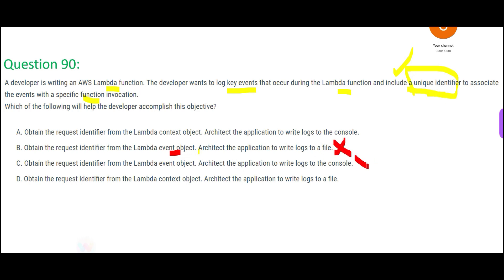We have to choose between D and A. D says to write logs to a file — if there are so many logs going to only one file, that is a problem. The other option says write logs to the console, which is the CloudWatch console. So the context object gives you the unique identifier, and the logs are written to the CloudWatch console. That would be my answer.